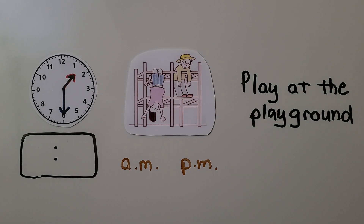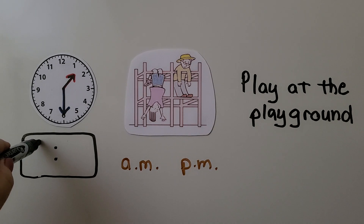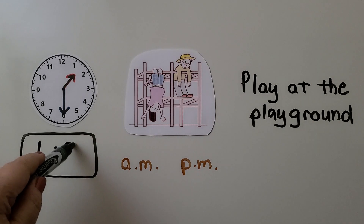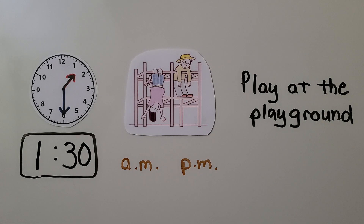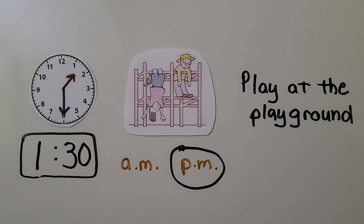This one says 'Play at the playground.' The hour hand is in between the one and the two, so it's not two yet — it must still be one. The minute hand is pointing to the six, so that means it's 1:30. Would you play at the playground at 1:30 AM or 1:30 PM? If you said 1:30 PM, you're right. 1:30 AM would be the middle of the night.